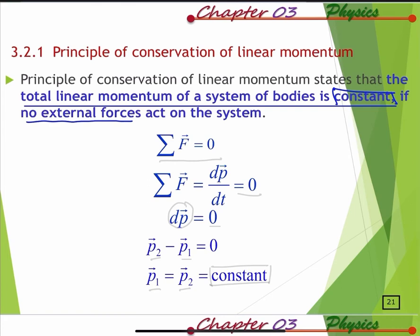We can write summation F equal to zero. We know that summation of force is the rate of change of momentum, so rate of change of momentum equals zero. That means dp equals zero, which means final momentum minus initial momentum equals zero. Rearranging, initial momentum equals final momentum — that is a constant.